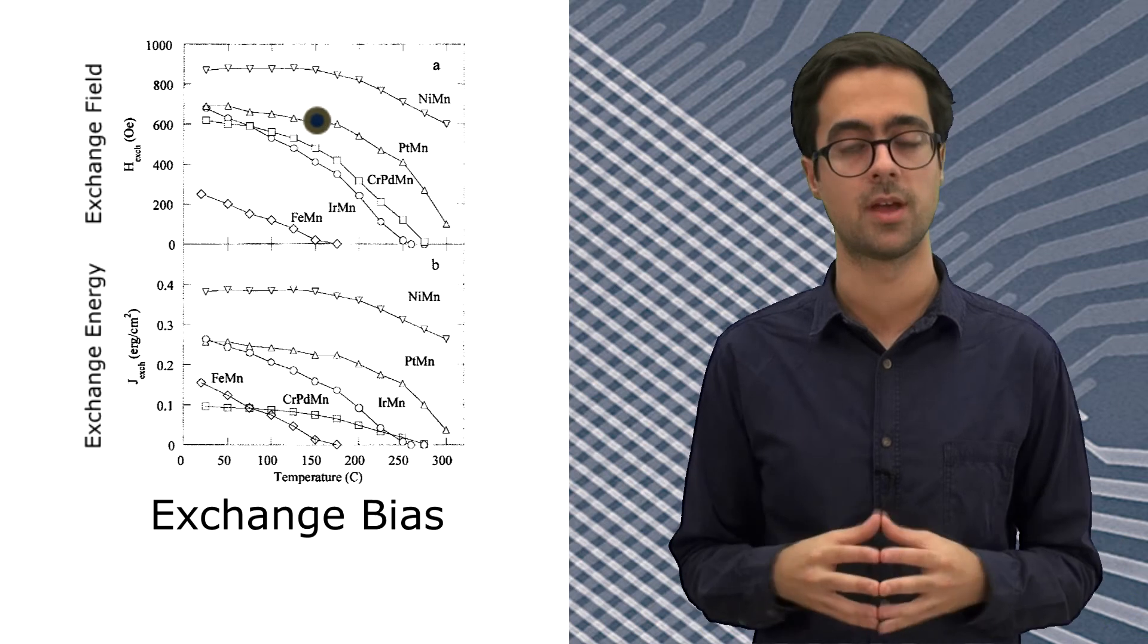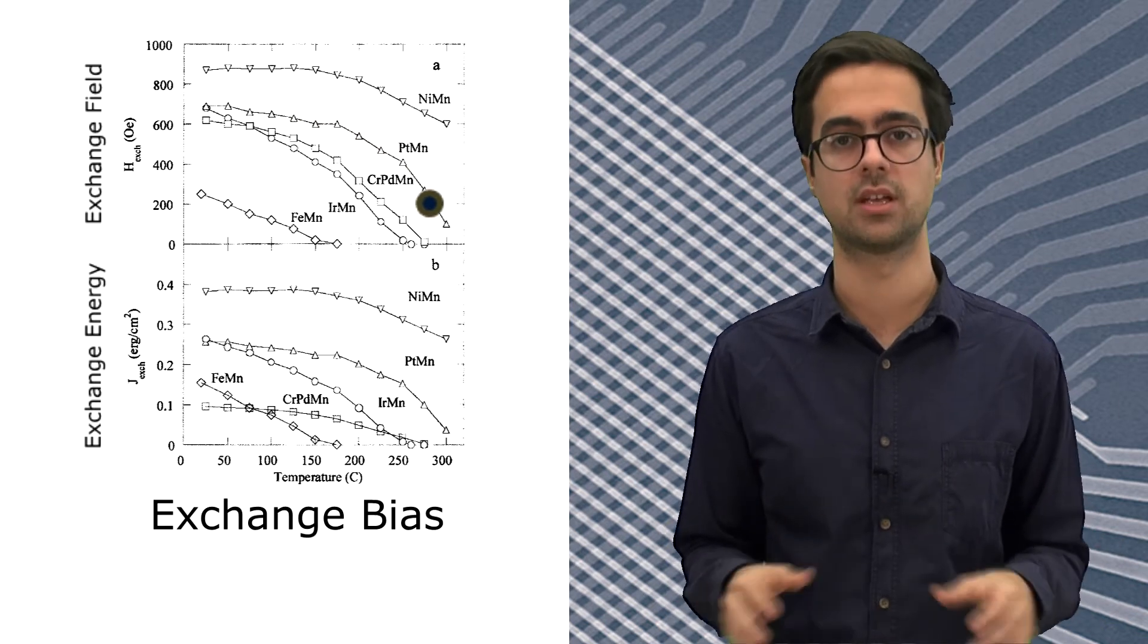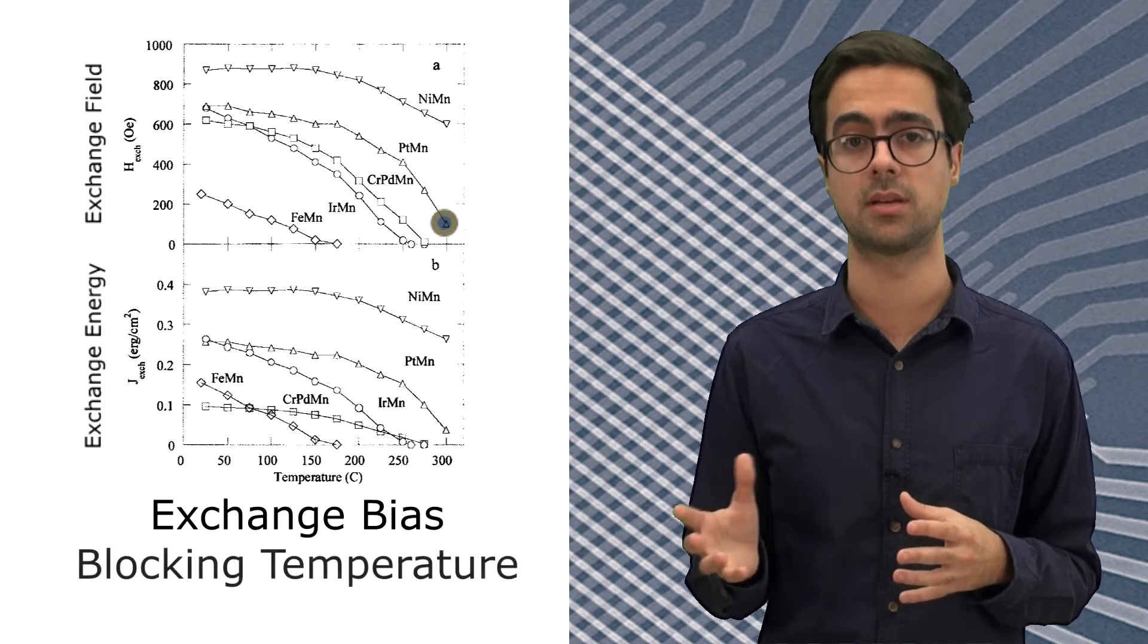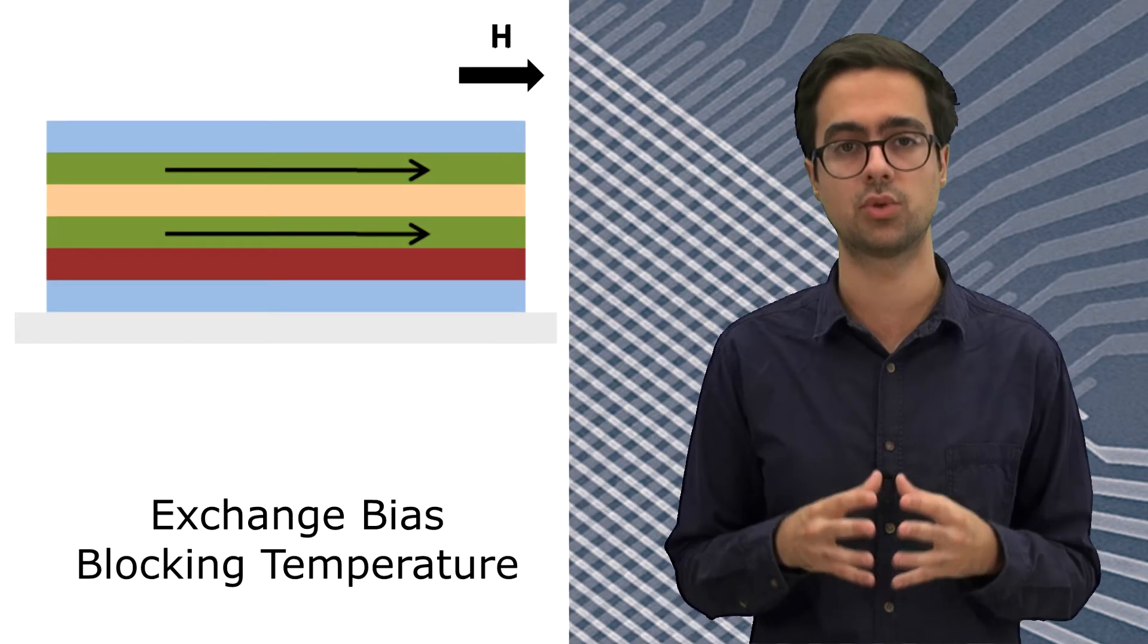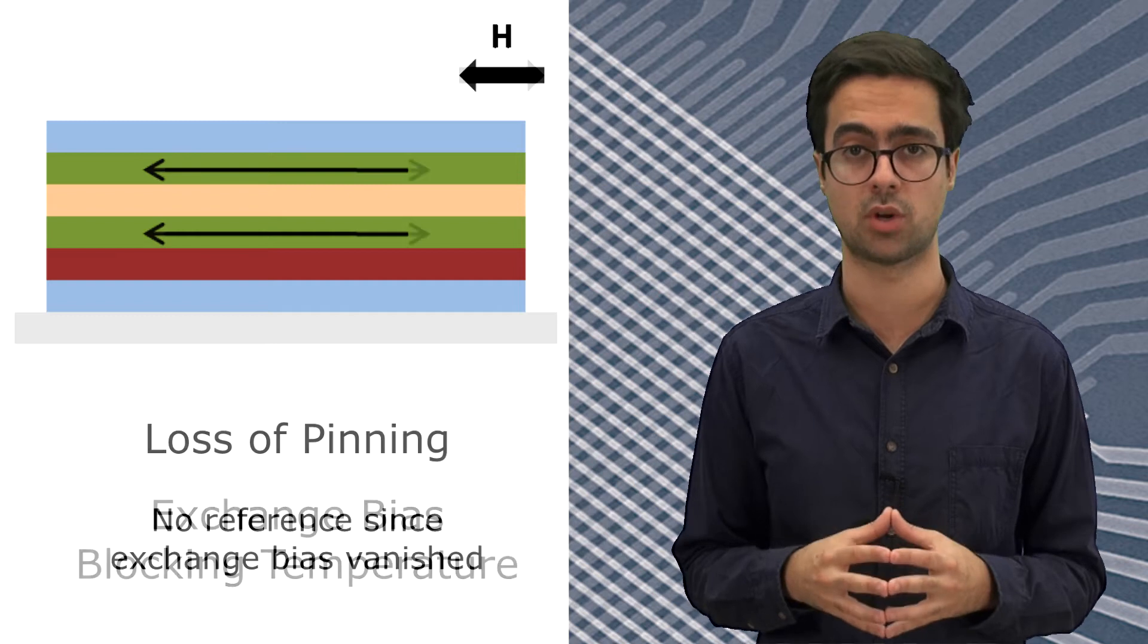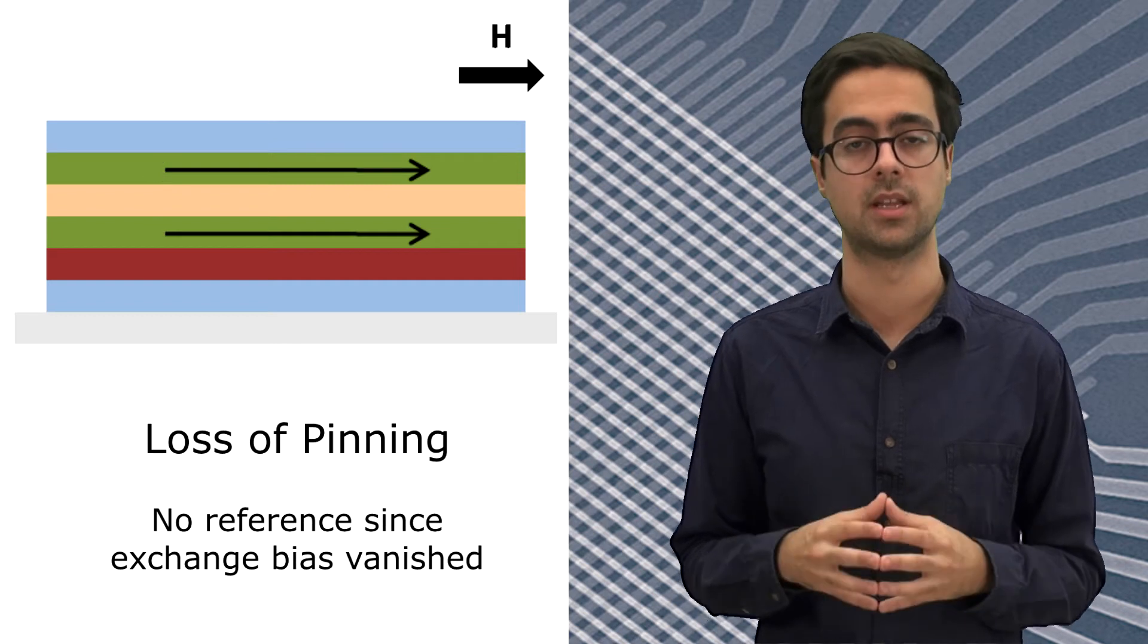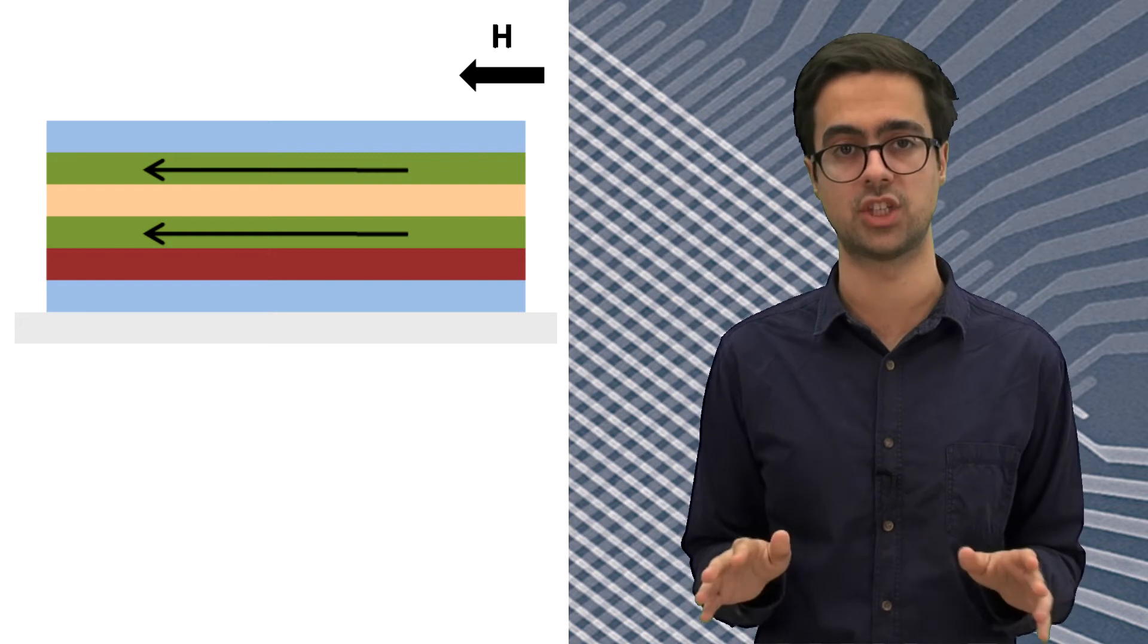And what is the problem? Well, the problem is that the exchange bias interaction vanishes above a certain critical temperature called blocking temperature, meaning that the reference of the sensor is lost and starts to rotate also with the field, and the sensor will lose its function. This problem is called loss of pinning. The exchange bias will decrease when reaching blocking temperature and totally vanishes after that.